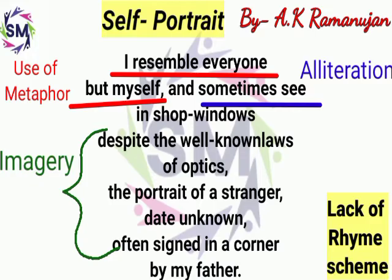Now if we talk about it, the starting line says 'I resemble everyone but myself.' The poem 'Self Portrait' is basically about identity. Ramanujan talks about the identity of a son to his father. In the first line itself, the poet feels that he resembles everyone in this world, including those he knows and those he does not know. He only sees others in himself; he doesn't see himself in himself.